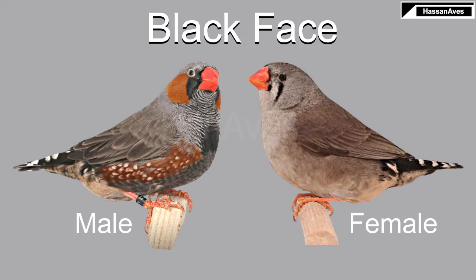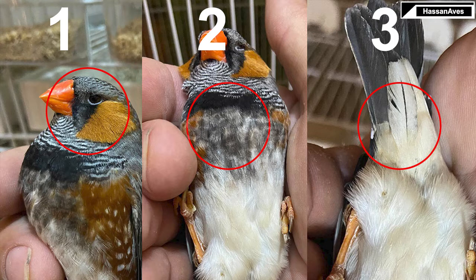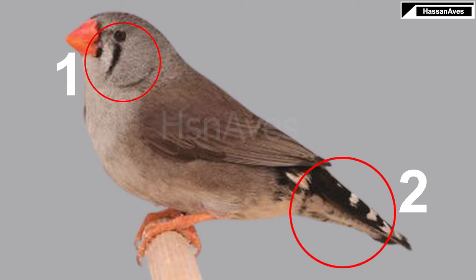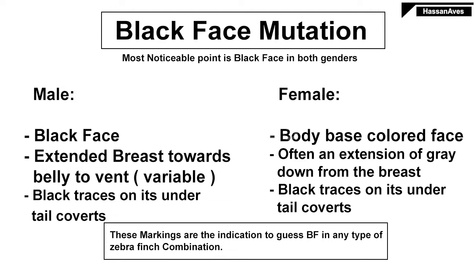Here you can see a black face mutation couple. In this mutation, you can identify a male by these markings. In the first picture you can clearly see the black face, while in the second picture you can see the extended breast toward its belly, which is variable in every individual. In the third picture you can see black markings on its under tail covers. In females, you can see two to three noticeable points: their smoky grey face, the extension of grey down from the breast, and black under-tail faces are also noticeable. By these markings you can identify the black face mutation easily in any kind of zebra finch combination.